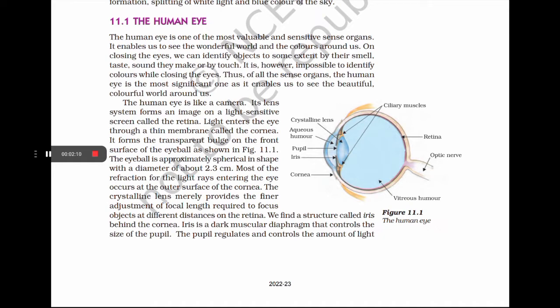Light enters the eye through a thin membrane called the cornea. It forms the transparent bulge on the front surface of the eyeball, which is approximately spherical in shape with a diameter of about 2.3 cm. Most of the refraction for the light rays entering the eye occurs at the outer surface of the cornea. The crystalline lens merely provides the finer adjustment of focal length required to focus objects at different distances on the retina.